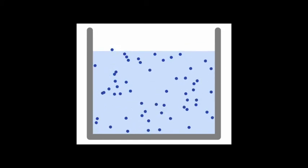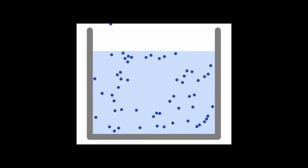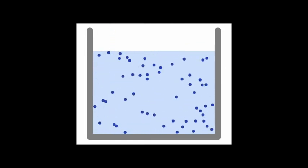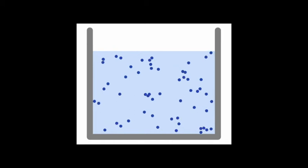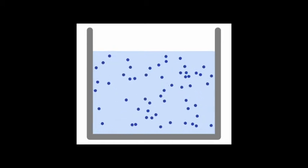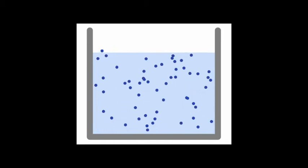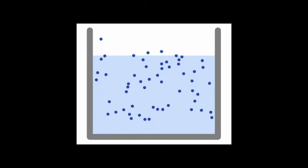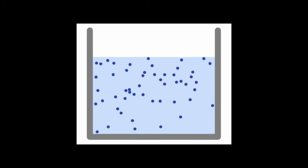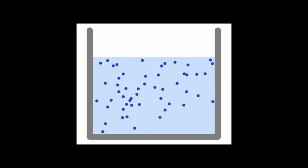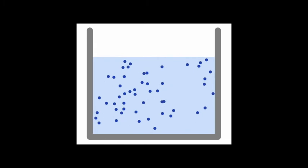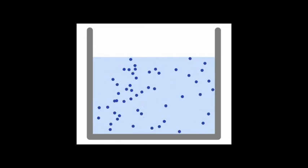Say you have a sample of a substance, like a liquid or a solid, that is in contact with the environment. There are always going to be a few molecules that have enough energy to overcome the attractive forces and escape into the gas phase, even if you're not at the boiling point.